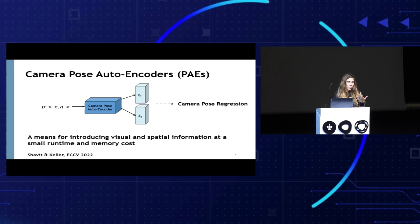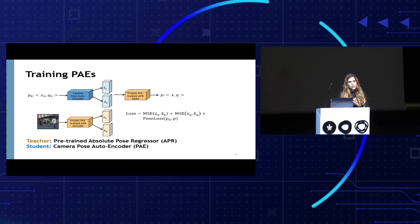Similarly to neural radiance fields, we use Fourier features and MLPs to encode the camera pose into a high-dimensional latent space. PAEs are trained via a student-teacher approach using APRs as teachers. Given a latent representation of a query image generated with a pre-trained APR, the PAE student learns to generate the same encoding but from the respective camera pose. This is achieved by optimizing the L2 loss between the two encodings and the camera pose loss when applying the teacher on the pose encoding.